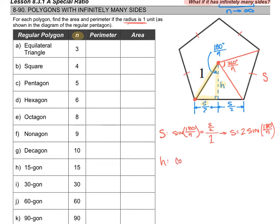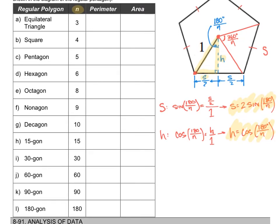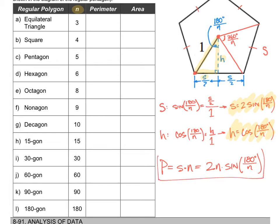For h, I'll use the cosine ratio because h is the adjacent leg to the angle 180/n. So cosine of (180/n) = h divided by the hypotenuse of one. This gives h = cos(180/n). Now for perimeter: perimeter equals s times n, which becomes 2n·sin(180/n). That's our perimeter formula.